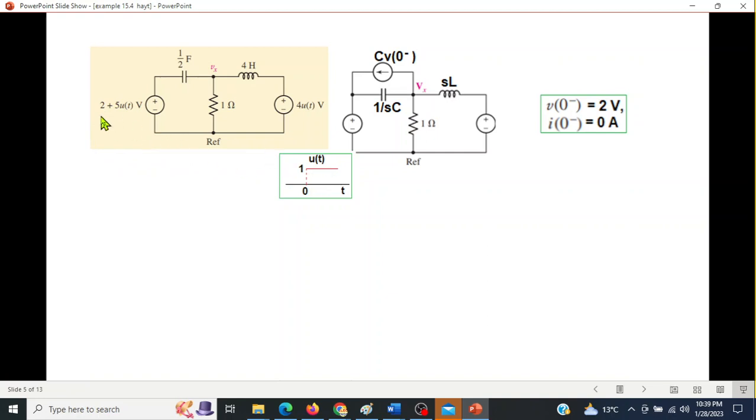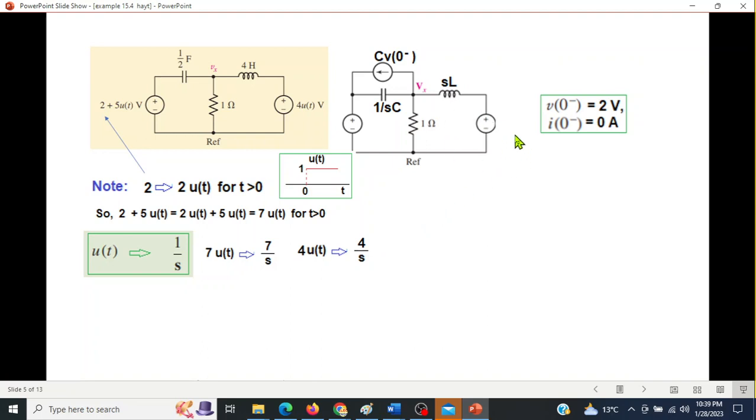After t equals 0, we have 2 into ut, so 2 into ut after t greater than 0, plus 5ut, giving total 7ut. So this source is 7ut. ut in s-domain is 1 over s, so this source is 7 over s. The right source is 4 over s, so this source is 4 over s.